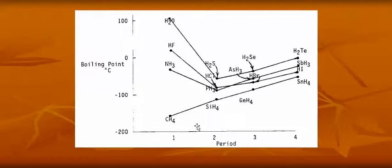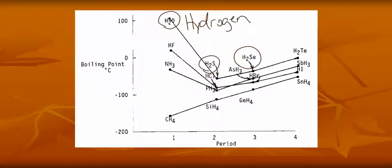Here's a graph of boiling point versus period. I'm going to look specifically at group 6A. H2O molecules have hydrogen bonding interacting between them, strong type of intermolecular force. H2S has dipole. Notice the difference in boiling point.